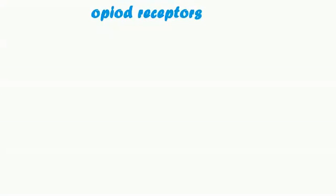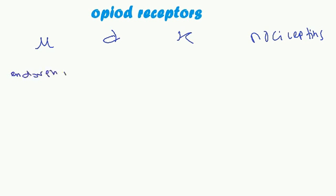Welcome to the video on opiate receptors. We have four main receptors: mu, delta, kappa, and nociceptin. The endogenous ligands of these respective receptors are endorphin for mu, enkephalin for delta, dynorphin for kappa, and nociceptin for the nociceptin receptor.